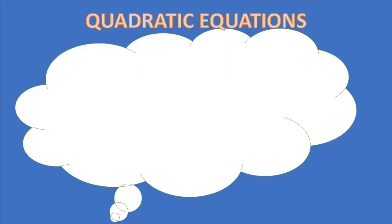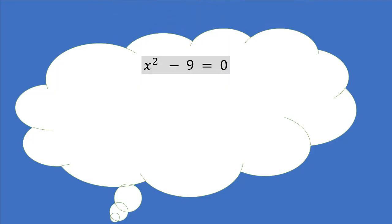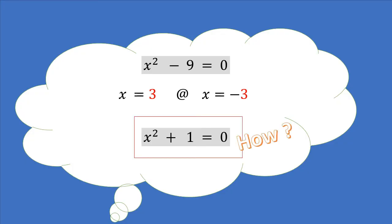We have studied quadratic equations in earlier grades. And we know that if x² - 9 = 0, x is either 3 or negative 3. Now, let's try to find a solution for x² + 1 = 0. Are you sure or do you think that there is no solution to this one? Don't worry if we couldn't get the answer to these questions.